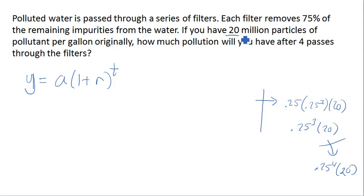In this case, the 20 million particles is our initial amount, or our starting amount. And 75% is related to the growth rate. In this case, we're decreasing, or removing 75% each time. So our growth rate is going to be negative 0.75.